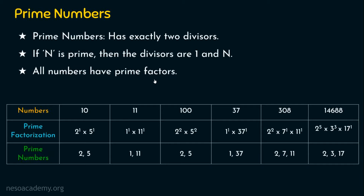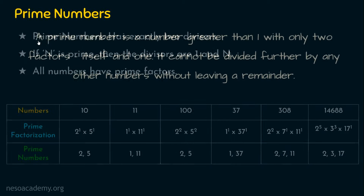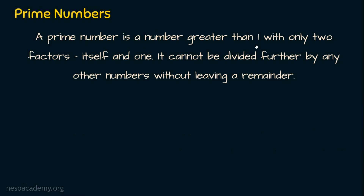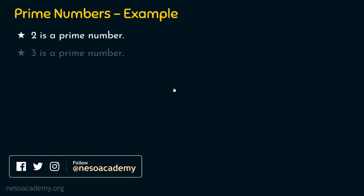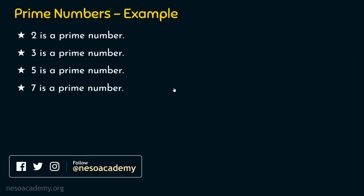Let's see how prime numbers are formally defined. A prime number is a number which is greater than 1 with only 2 factors or 2 divisors: one is itself and the other one is 1. It cannot be divided further by any other number without leaving a remainder. Some examples: 2 is a prime number, 3 is a prime number, 5 is a prime number, 7 is a prime number, but 9 is not a prime number.